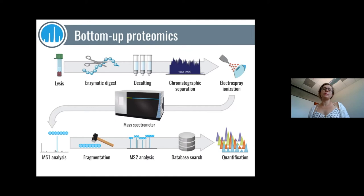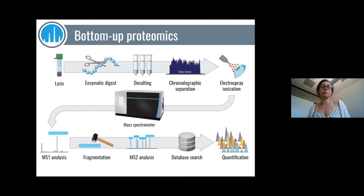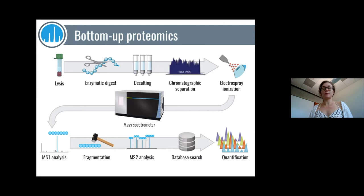This is the typical bottom-up proteomic workflow you've all seen. You start with your proteins of interest, extract them from your sample, perform enzymatic digestion — usually using trypsin — clean up your sample, separate it, and introduce it into the mass spectrometer. Inside the mass spectrometer, you collect a series of precursor scans and MS2 fragment scans. Once you have these spectra, you can search them against a database and quantify the PTM-containing peptides you identified.